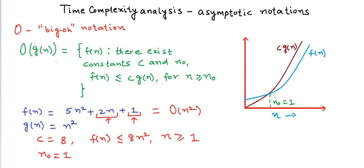We have plotted the graph here, and you can see that after n = 1 — that is our n₀ — c·g(n) is always greater than f(n). This assures that f(n) never grows at a rate faster than c·g(n) after n₀. So Big O notation gives us an upper bound of the rate of growth of a function, and in time complexity analysis this is useful because it tells us the time cannot grow faster than this upper bound.